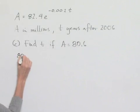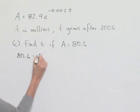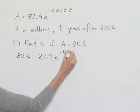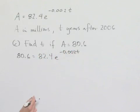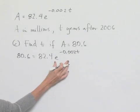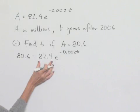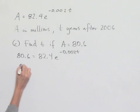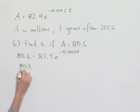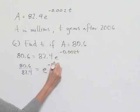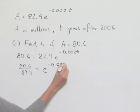We'll have 80.6 equals 82.4 times e to the negative 0.002 times t. We can start off by isolating our exponential expression. We can divide both sides by 82.4. So, we'll have 80.6 divided by 82.4 equals e to the negative 0.002 times t.